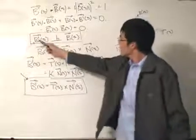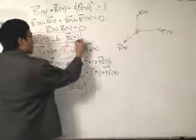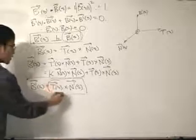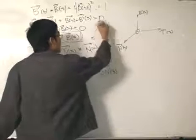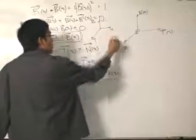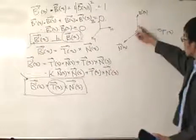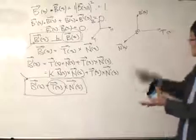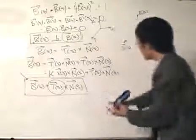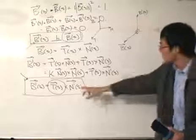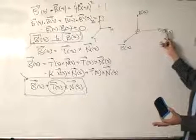Now let's combine this with the other equation. The first derivative of the binomial vector is perpendicular to the binomial vector itself. And what do we know about the binomial vector and the unit tangent vector? If I draw it: T is here, B is here, and the unit normal vector is there — the Frenet frame. So I can swivel these two vectors around, and let one of these swiveling vectors be the binomial vector itself.